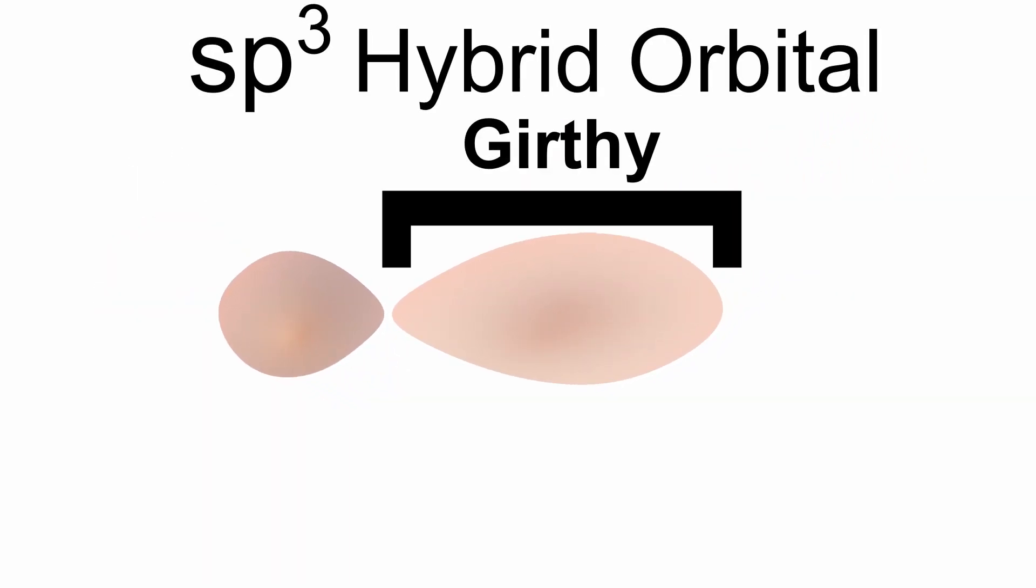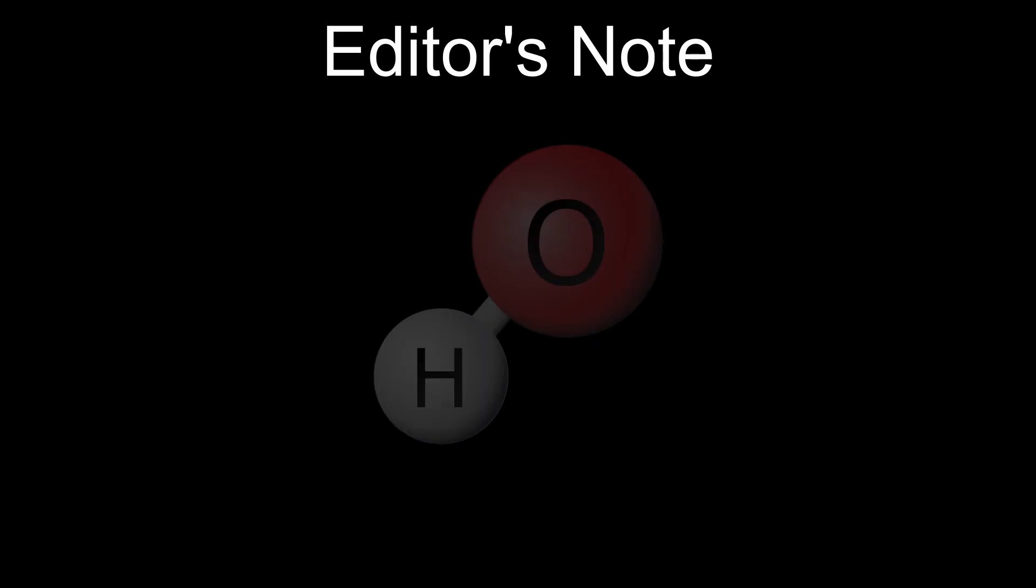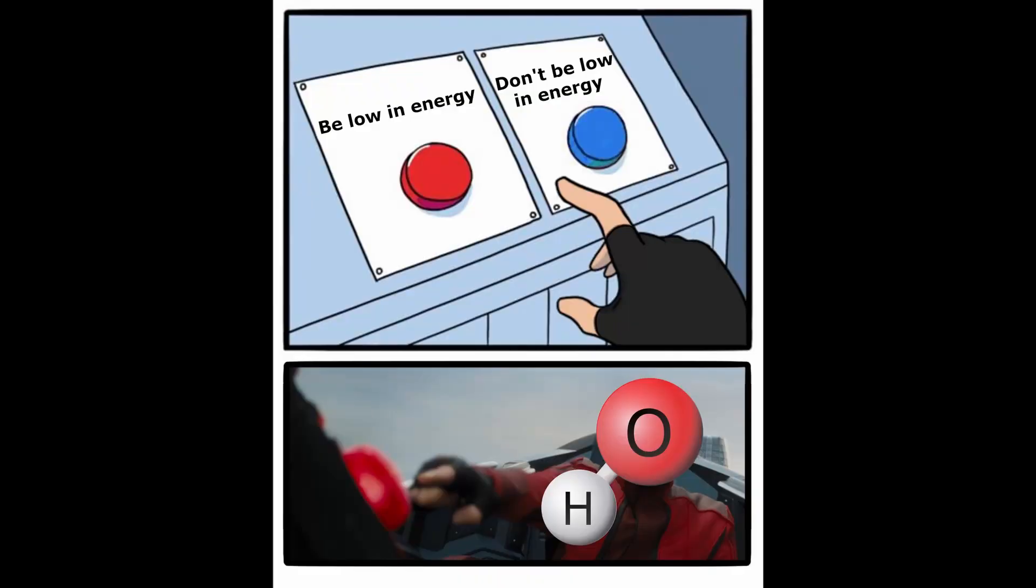Kabam! We get an orbital with a nice long girthy lobe and a little ball at the base, perfect for clapping some orbital cheeks. Editor's note, this isn't exactly why the oxygen on the hydroxide hybridizes its orbitals. It does so for the same reason anything happens in chemistry, because it is lower in energy.